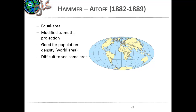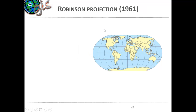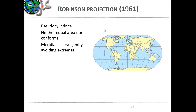The Hammer equal area projection is more representative of actual sizes. The sizes of all continents and countries look more or less like what they should be, so it's good for a worldwide population density map, whereas the Mercator projection is better for nautical purposes. The Robinson projection of 1961 is a pseudo-cylindrical projection — sort of midway between equal area and conformal projections — which gives more realistic-looking maps while avoiding extremes.